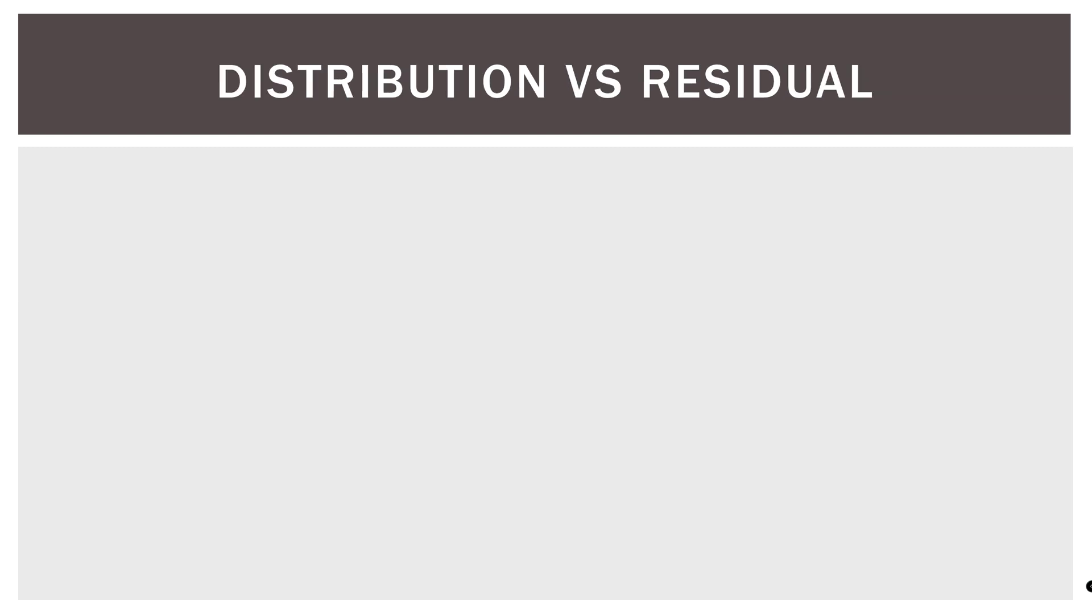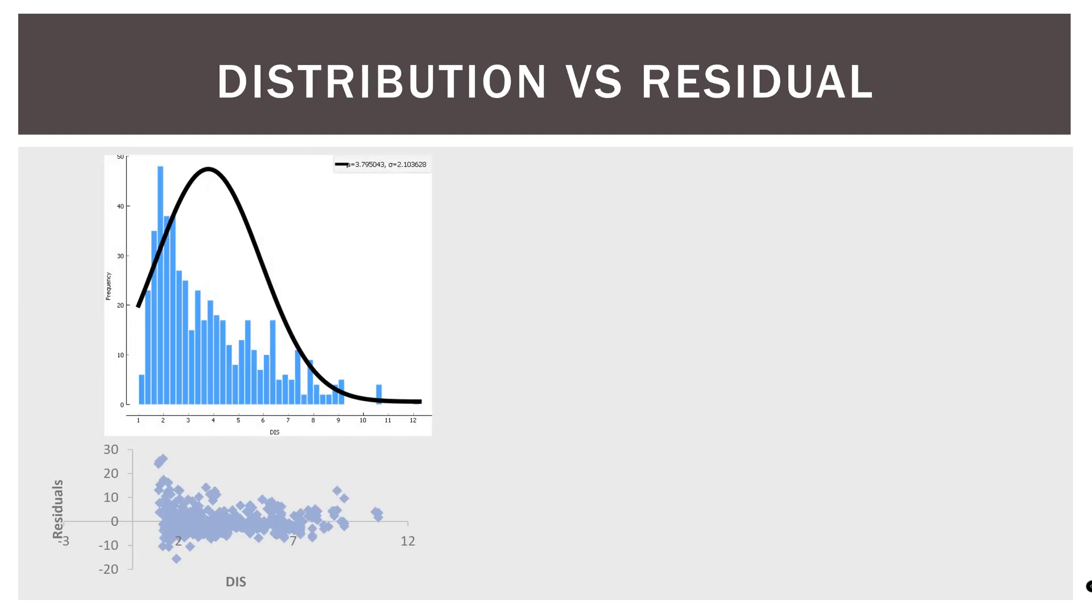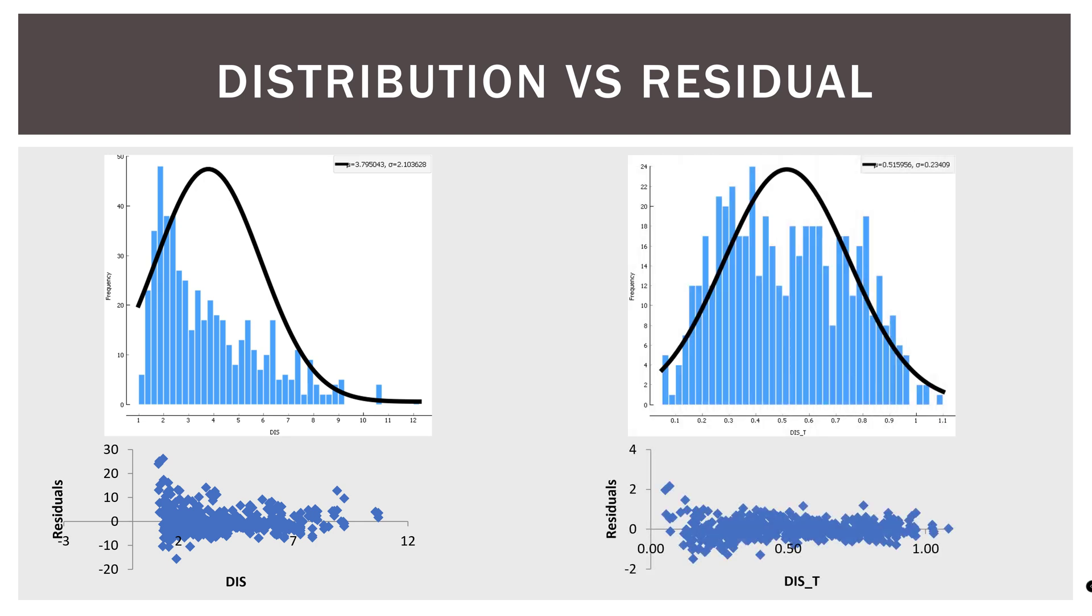So notice how the V shape and the residuals has gone and homoscedasticity is better after the transform of the log base 10. So here is the distribution versus the residuals. Here was our original distribution and here are the residuals for that distribution. So you can see how they go hand in hand. Here is the transformed and here are the transformed residuals. Again, right down the middle, evenly spaced, very compact in towards the zero line.